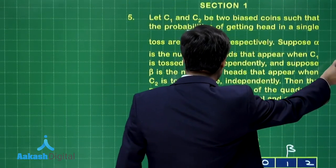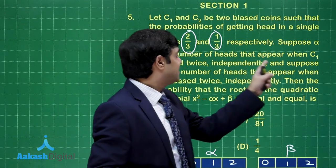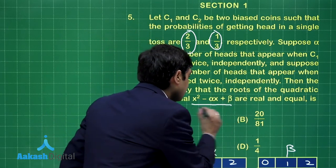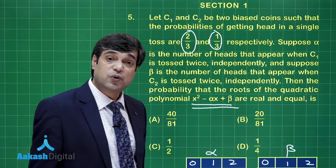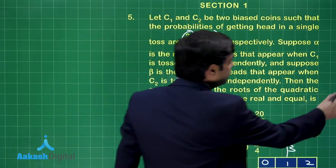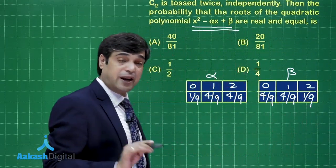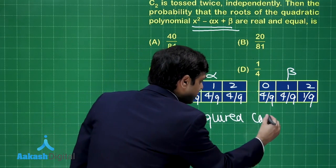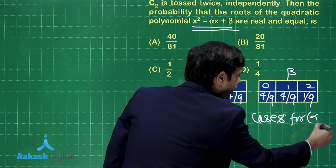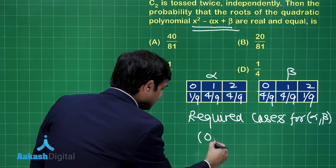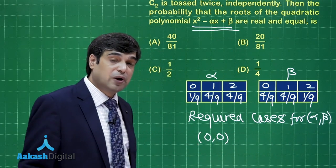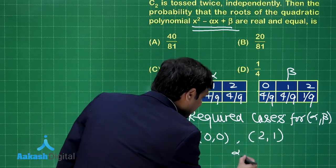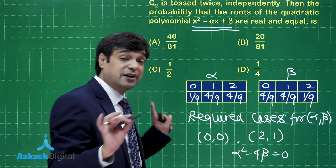Now moving back, let us read again. Suppose alpha is the number of heads that appear on C1 and beta on C2. Then the probability that the roots of the quadratic are real and equal. D that is alpha square minus 4 beta is equal to 0. This is what we are looking. Possible values for alpha and beta, it is 0, 1, 2 only. So what is the actual required case? Required cases for ordered pair alpha beta. This is 0, 0. When you say 0, 0, alpha square minus 4 beta will become 0. Or second 2, 1. In each case, alpha square minus 4 beta will be 0. These are the only two possibilities.